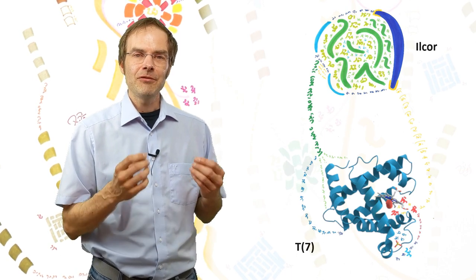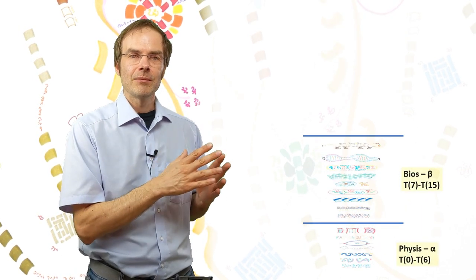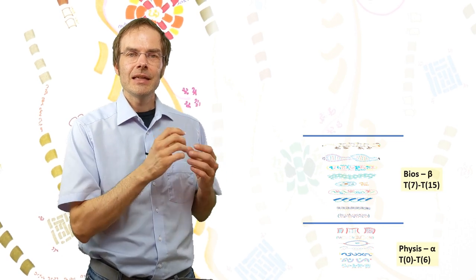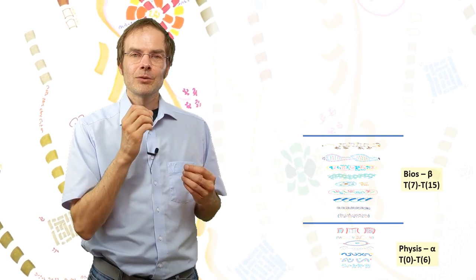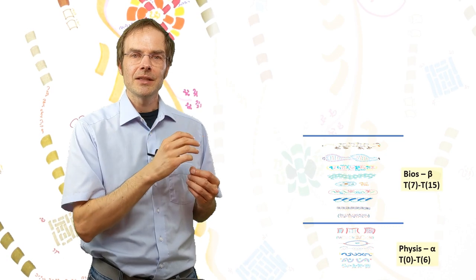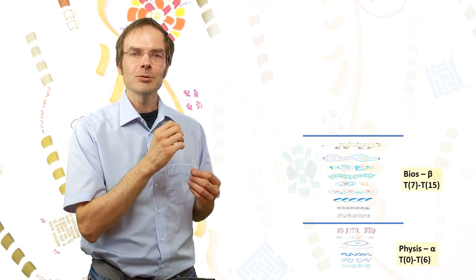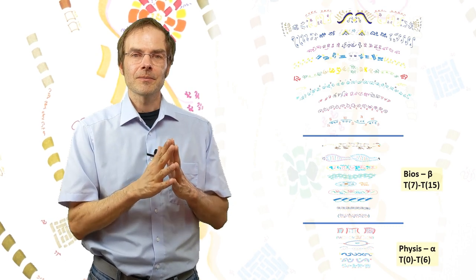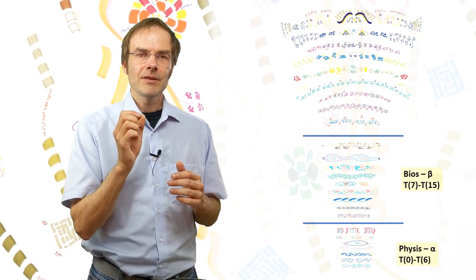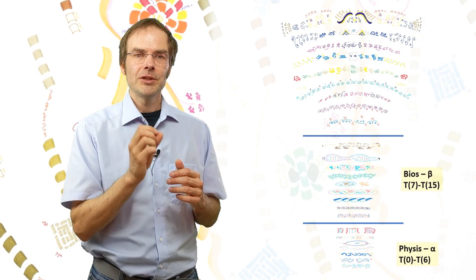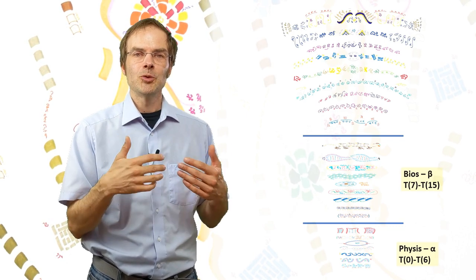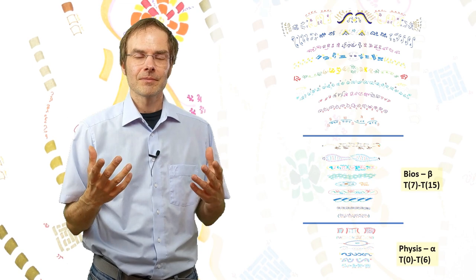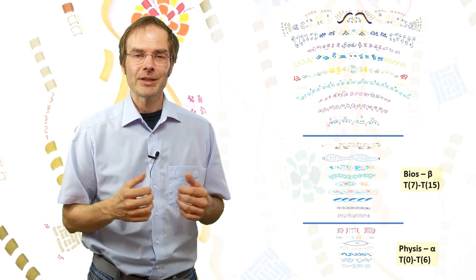In fact, every level of organization of the biological realm, the realm beta, is linked to one totality. Every totality of the realm beta is linked to a totality in the realm gamma. And that is because even the elementary biological units, they have some rudimentary ILCOR, a self, in lack of a better word.